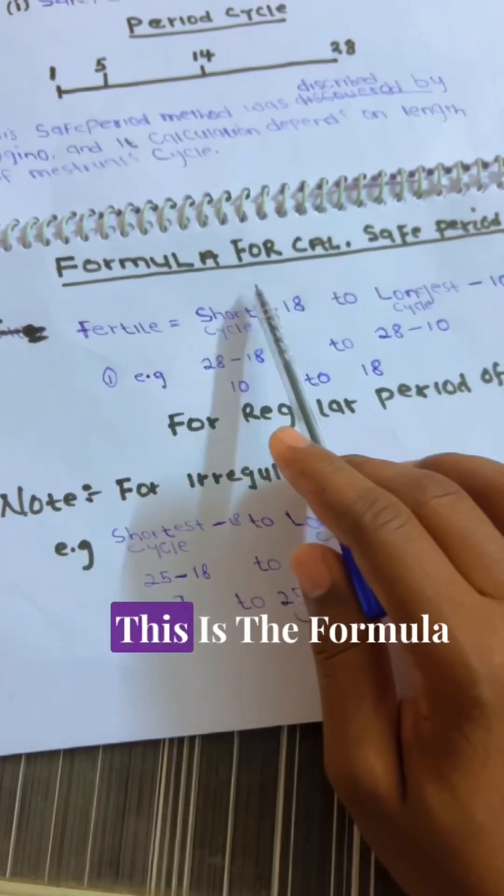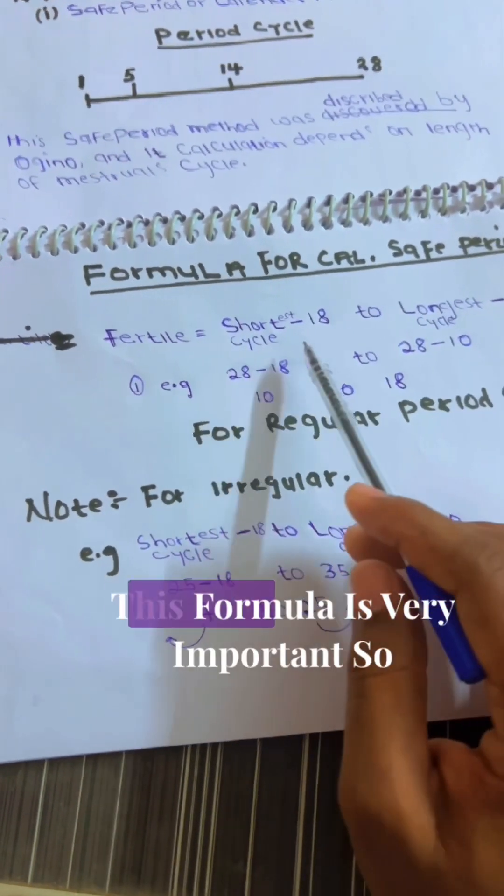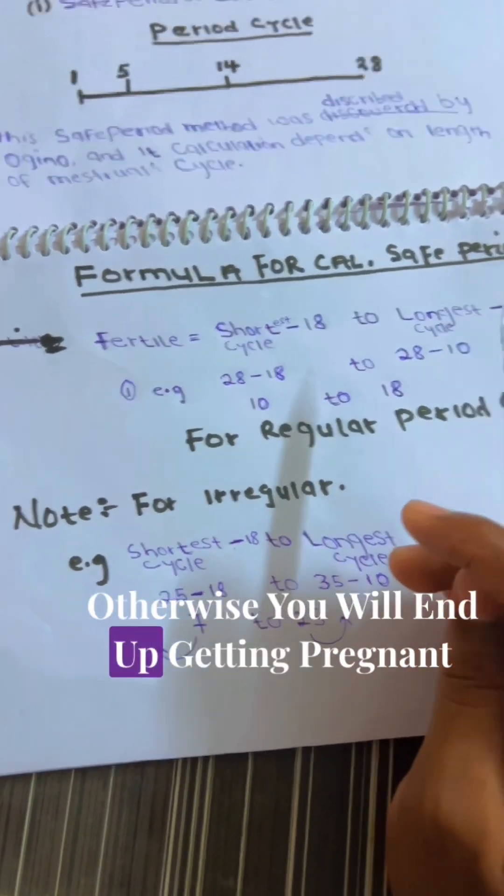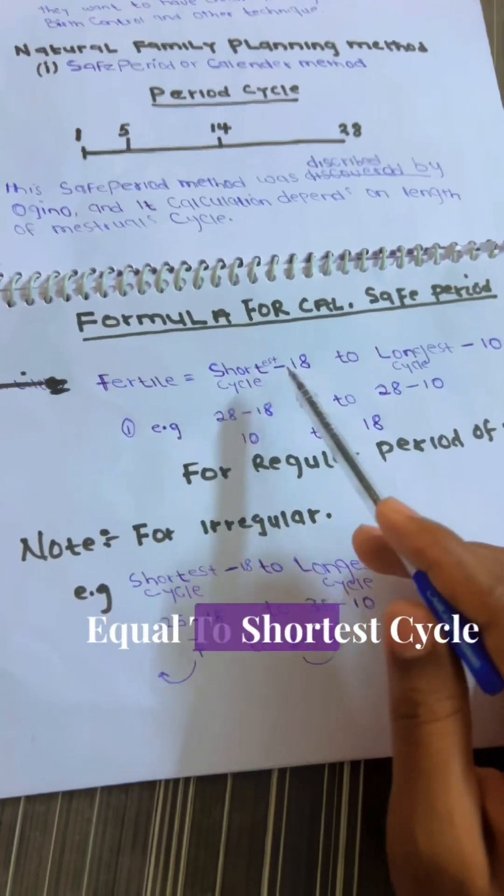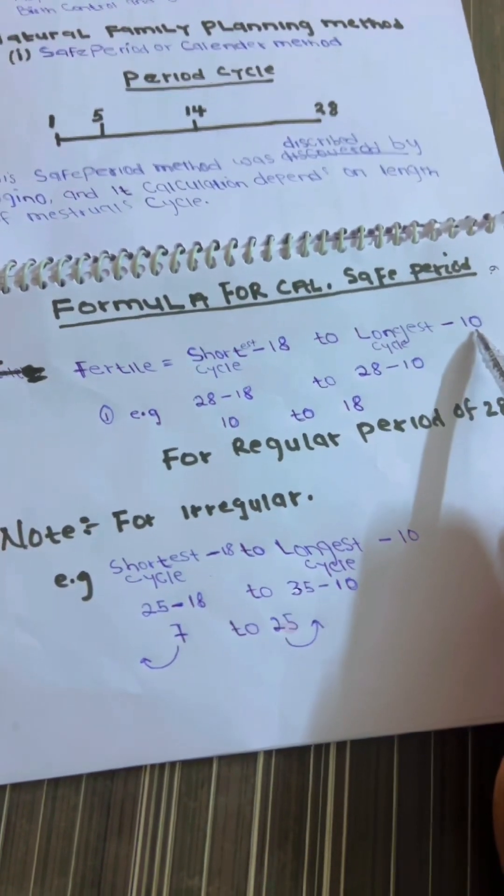This is the formula for calculating the safe period. This formula is very important, so you have to understand it very well, otherwise you will end up getting pregnant. The formula is: fertile equals shortest cycle minus 18 to longest cycle minus 10.